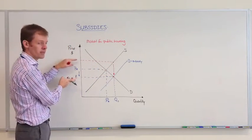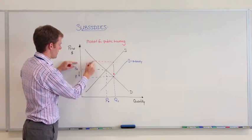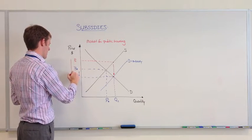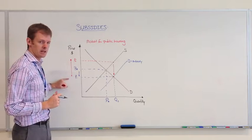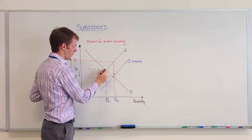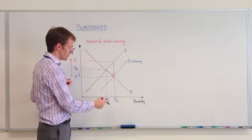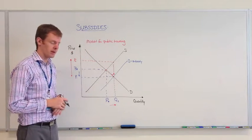The subsidy is shown as the vertical distance between here and here. By offering them this subsidy, we shift the quantity down this curve, leading to more consumers demanding their products.